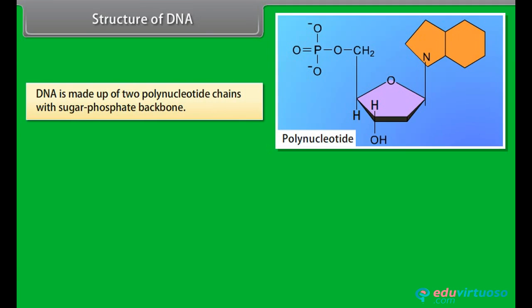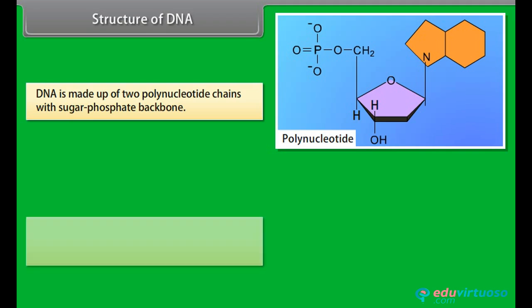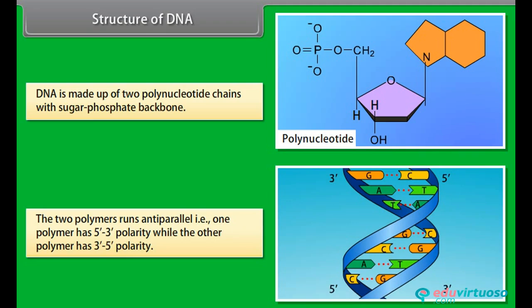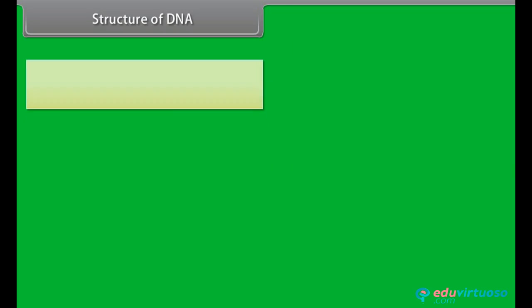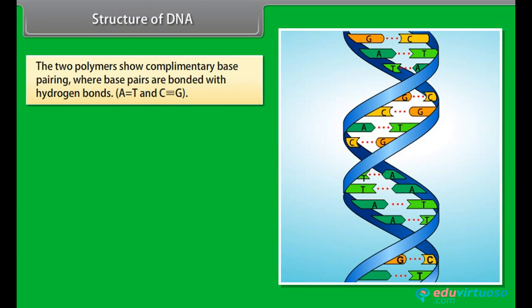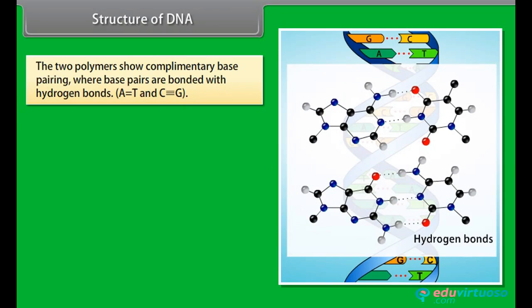DNA is made up of two polynucleotide chains with a sugar-phosphate backbone. The two polymers run anti-parallel — that is, one polymer has 5' to 3' polarity while the other polymer has 3' to 5' polarity. The two polymers show complementary base pairing, where base pairs are bonded with hydrogen bonds.